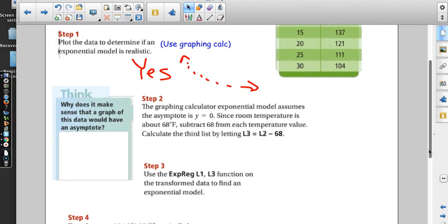The graphing calculator exponential model assumes the asymptote at y equals zero. Since room temperature is about 68 degrees Fahrenheit, they're saying if we take our cup of coffee and we sit it in this room and we wait 24 hours and we come back, that's not going to be frozen because this room is not freezing. Coffee is going to go down to room temperature but it's not going to be frozen.